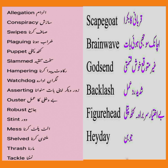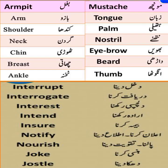Backlash: شدید ردعمل۔ Figurehead: بے اختیار سربڑا، کٹ پتلی۔ Armpit: بغل۔ Arm: بازو۔ Shoulder: کندھا۔ Neck: گردن۔ Chin: ٹھوڑی۔ Breast: چھاتی۔ Ankle: ٹخنہ۔ Interrupt: دخل دینا۔ Interrogate: دریافت کرنا۔ Interest: دلچسپی رکھنا۔ Intend: ارادہ رکھنا۔